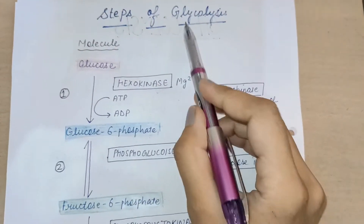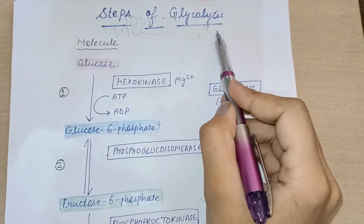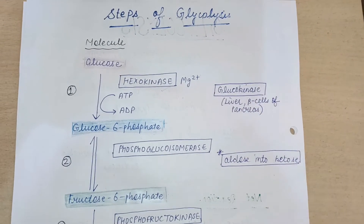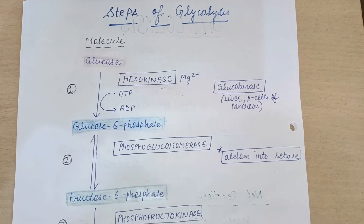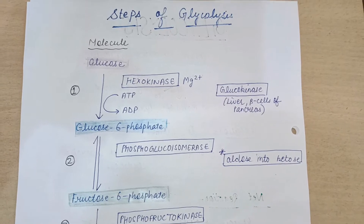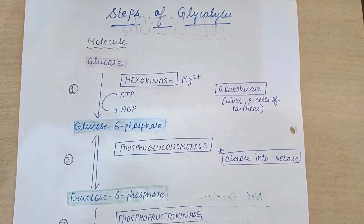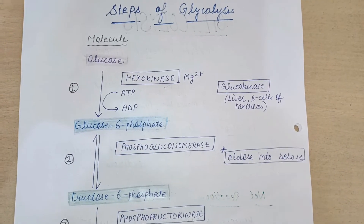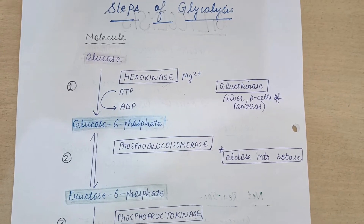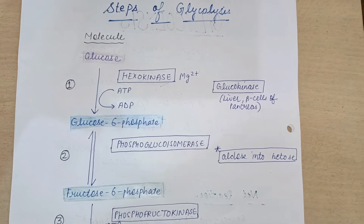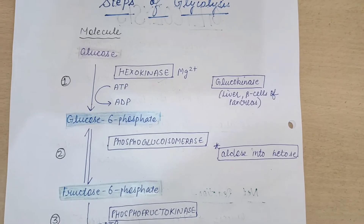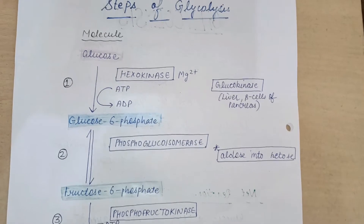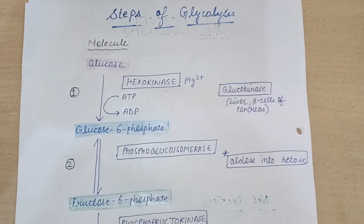Glycolysis has two phases. The first is the preparatory phase, during which energy is utilized — this is also known as the energy investment phase. During the second phase of glycolysis, energy is generated, and this phase is also called the payoff phase.